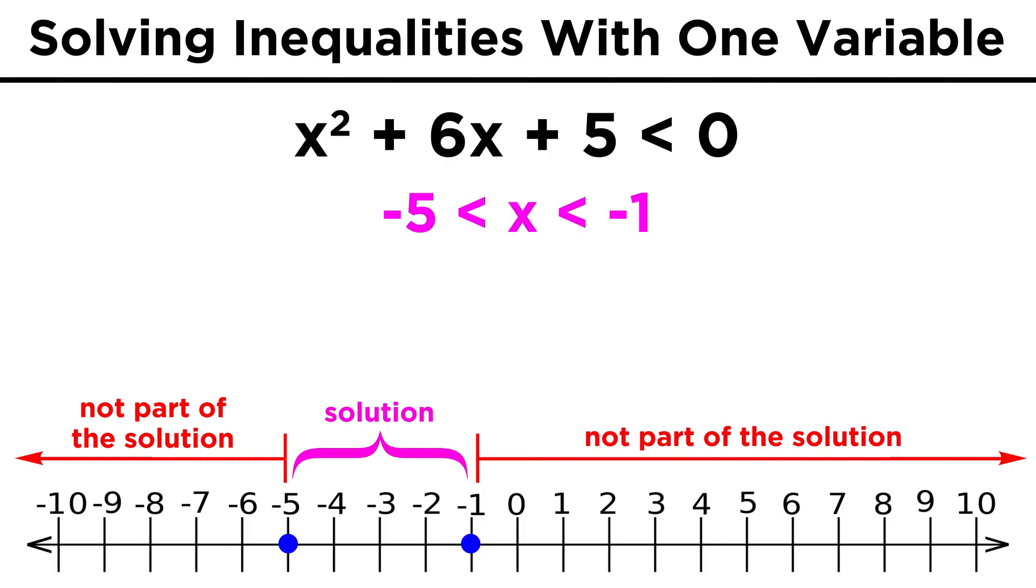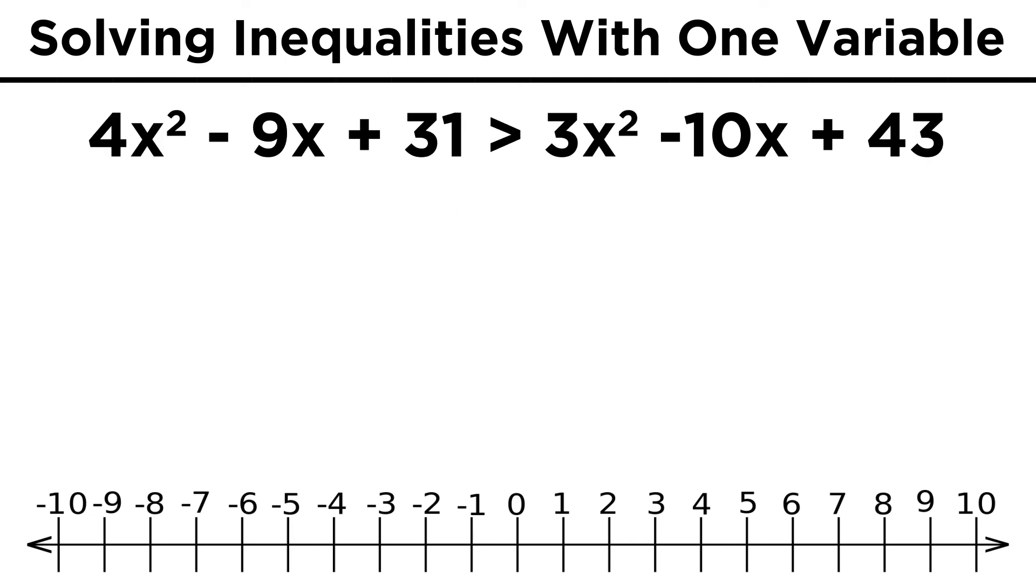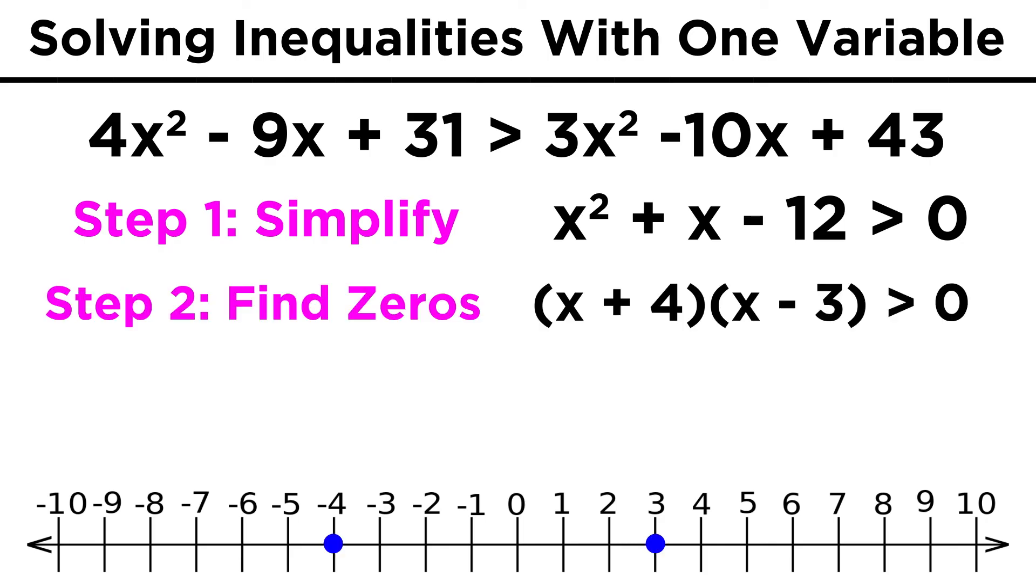The solution to the inequality is everything from negative five to negative one exclusive, which we denote by writing this parenthetical term. This approach will work for trickier inequalities with many terms on both sides. We just combine all the like terms on one side so that the other side is zero, and then solve.